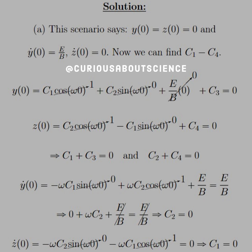So for scenario A, this says that our starting position at y equals 0 and z equals 0 is 0, or the origin. And the velocity in the y direction is e over b, the velocity in the z direction is 0 at time equals 0. Now we need to find the constants of our general solutions, and we can do that by plugging in 0 to the y equation and setting that all equal to 0.